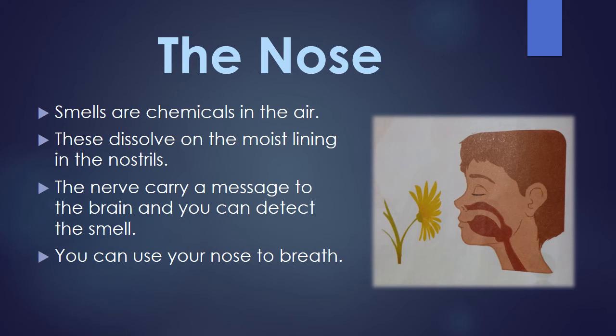Nose. Smells are chemicals in the air. They dissolve on the moist lining of the nostrils. The basic function of our nose is to smell different odors — they can be pleasant or unpleasant. The chemicals of a smell go through your nostrils into the moist lining, nerves carry the message to the brain, and you can detect the smell. Inside your nose there are nerve cells that send messages to the brain, which detects what sort of smell you are experiencing. One of the most important functions of the nose is that it is also used for breathing.